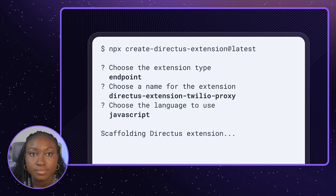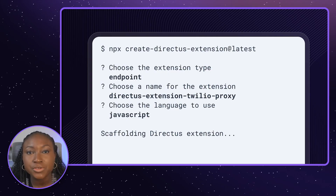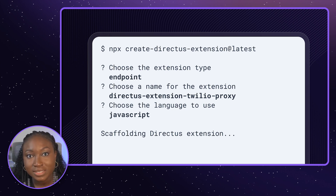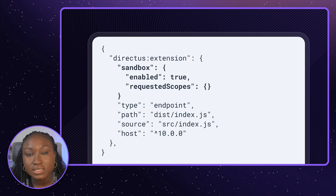Let's check out an example of how to develop a secure extension. Start by creating an extension like you normally do using the Directors Extension CLI. Next, open the package.json of the extension and add a sandbox property, which is an object.